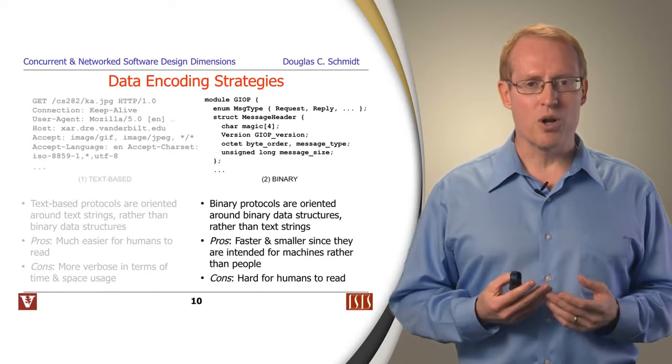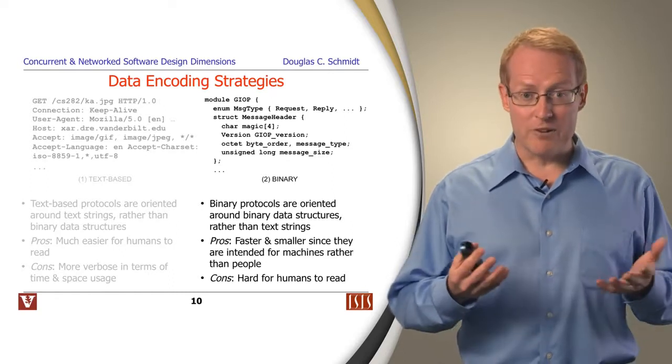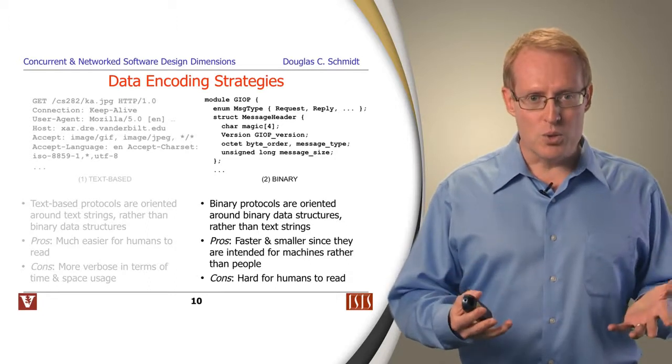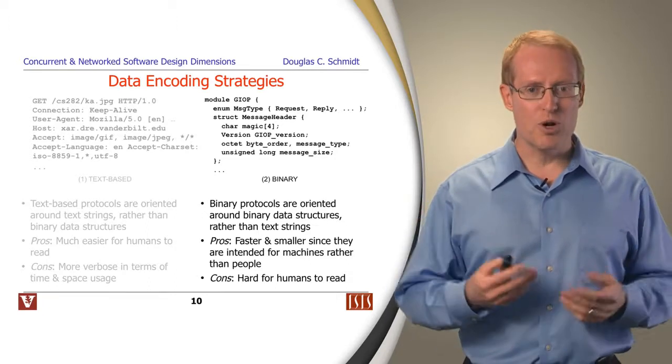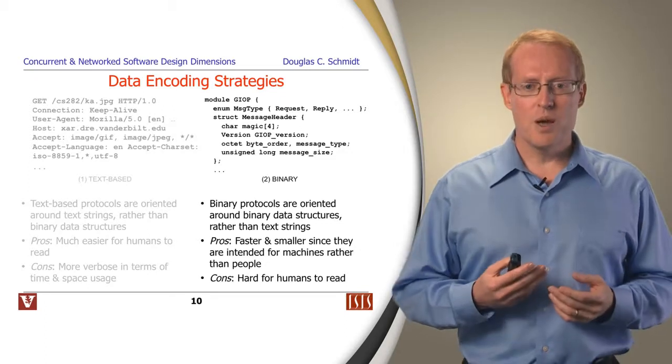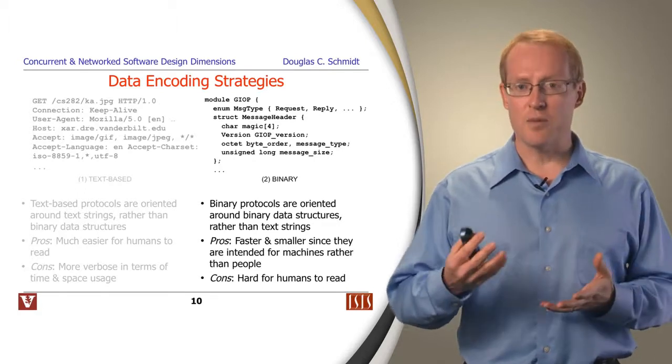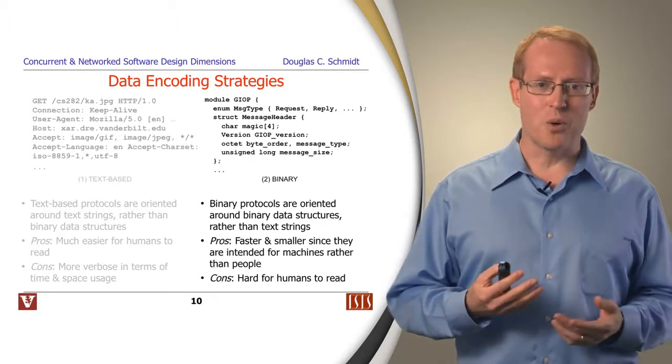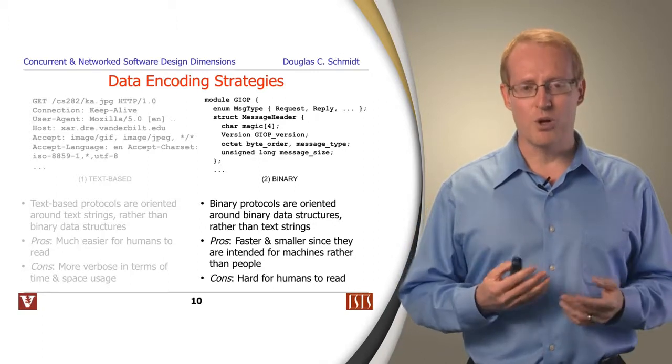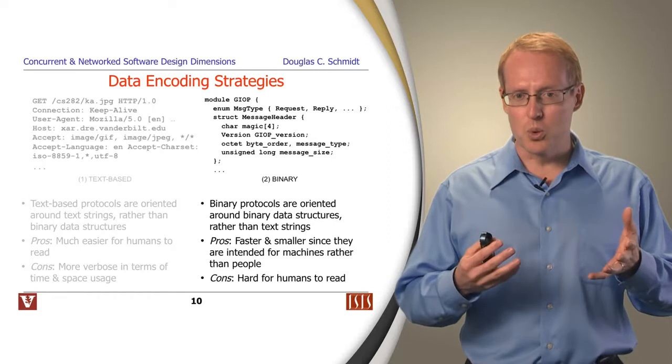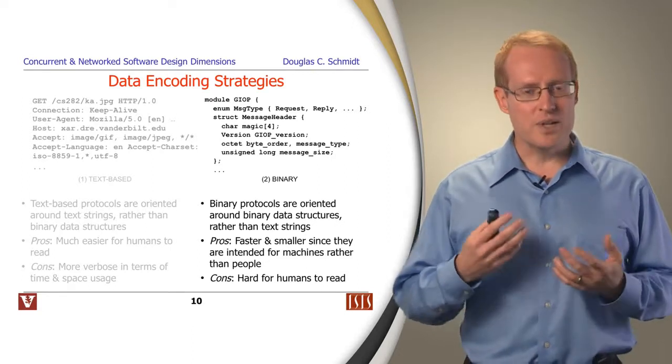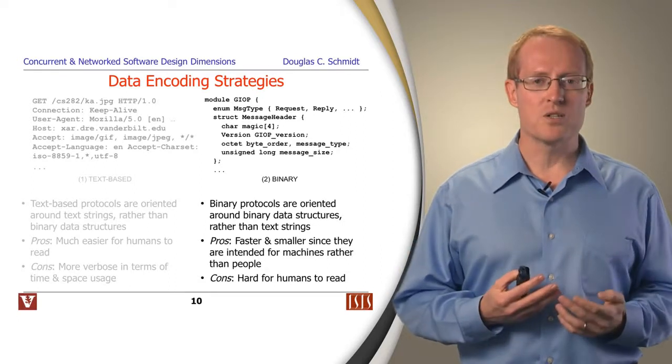The alternative strategy is binary-based data encoding. In this model, binary protocols are oriented around binary data structures rather than around text strings. And the main reason that they are used is that they tend to be much faster and smaller than text-oriented approaches because they're intended for machines to process rather than people. The downside is it's much harder to understand what's going on when you're using a binary-oriented protocol because you have to have a special tool like a packet analyzer to go in and understand what the information is. It also tends to make things perhaps a bit more tightly coupled in some ways, as well.